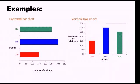One thing I need to mention: in a bar graph two lines are needed — one is horizontal and another one is vertical. Both vertical and horizontal lines will have some labels. In the first example, the vertical line is labeled 'month' and the horizontal line is labeled 'number of visitors.' In the next example, the horizontal line has 'month' and the vertical line has 'number of visitors,' making it a vertical bar graph.